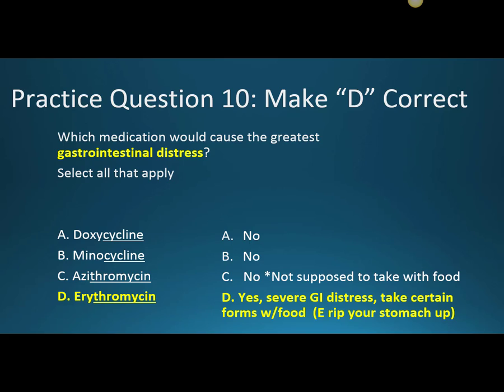To sum up: tetracyclines and macrolides have a lot to them, but a lot of consistency. There aren't generations like cephalosporins, but remember: doxycycline and minocycline are the long-acting tetracyclines. Azithromycin is the newest macrolide and the best — no P450 interaction. Clarithromycin is second newest and has the peptic ulcer disease indication with less P450 impact. Erythromycin was first, causes GI distress, and has significant P450 interactions.